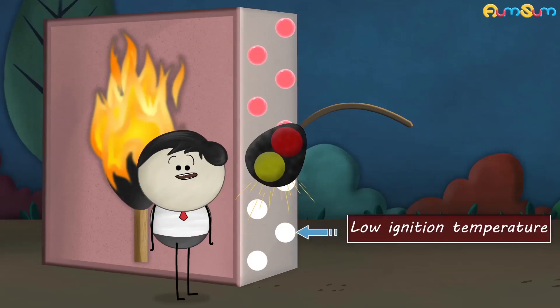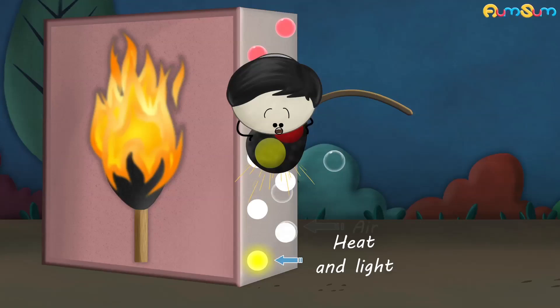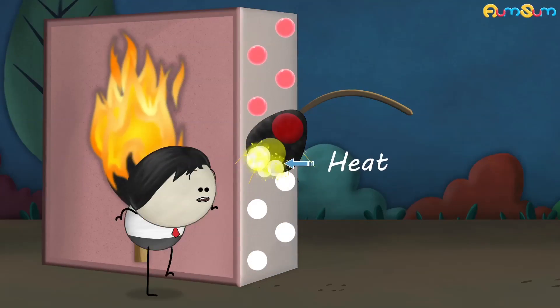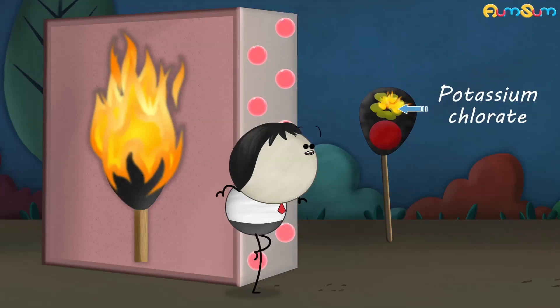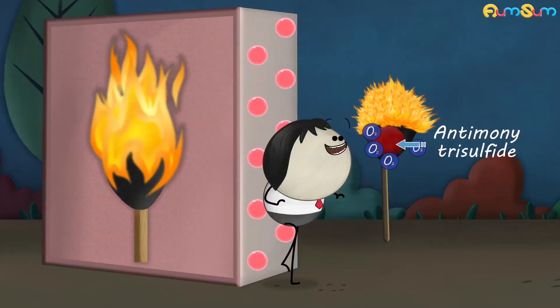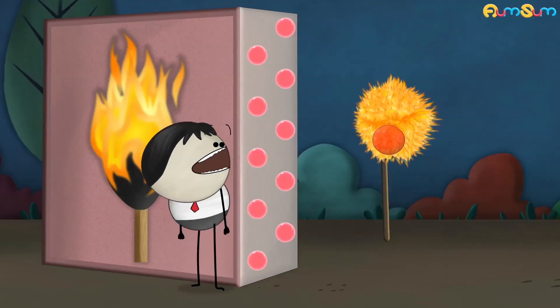White phosphorus has a very low ignition temperature. It immediately ignites in air, producing heat and light. Thus, beginning the process of combustion. The heat produced breaks down the potassium chlorate present in the match head, releasing more oxygen. This oxygen combines with antimony trisulfide which is also in the match head and keeps the flame burning.